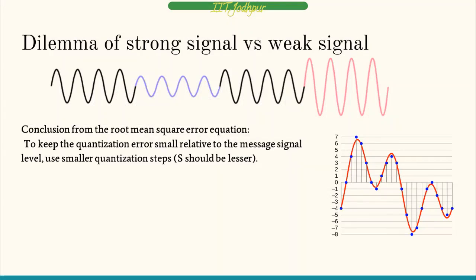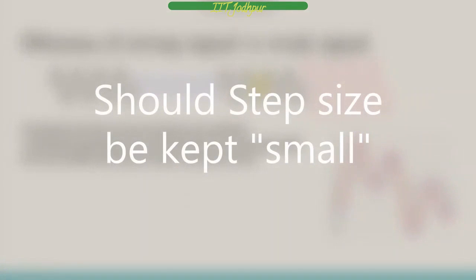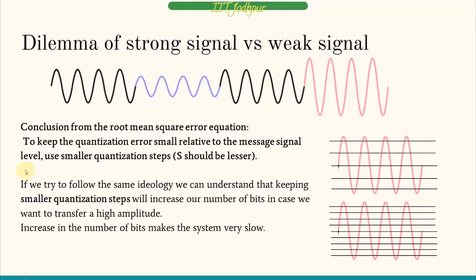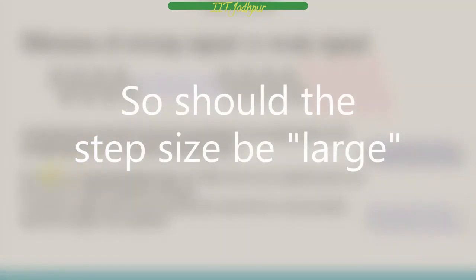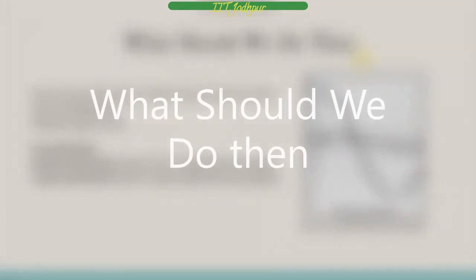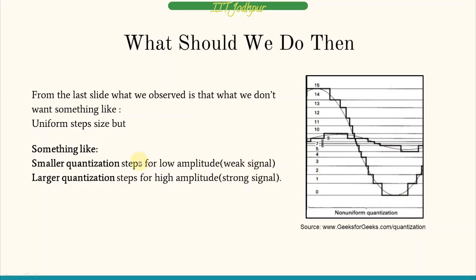We need to decide the quantization step size to minimize error. The RMS error is S²/12, so keeping S small reduces error. However, smaller quantization steps mean more bits are required to cover a high amplitude range, making the system very slow. On the other hand, large quantization steps give very poor SNR for low amplitude signals — we cannot trace the change in the pulse. Therefore, we need non-uniform quantization: smaller steps for lower amplitude signals and larger steps for high amplitude signals.